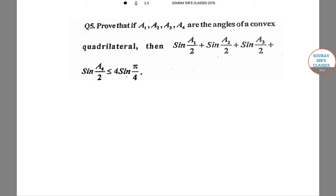Here I will solve the following question in which we have to prove that sine a1 by 2 plus sine a2 by 2 plus sine a3 by 2 plus sine a4 by 2 is less than or equals to 4 sine pi by 4, where a1, a2, a3, and a4 are four angles of a convex quadrilateral.